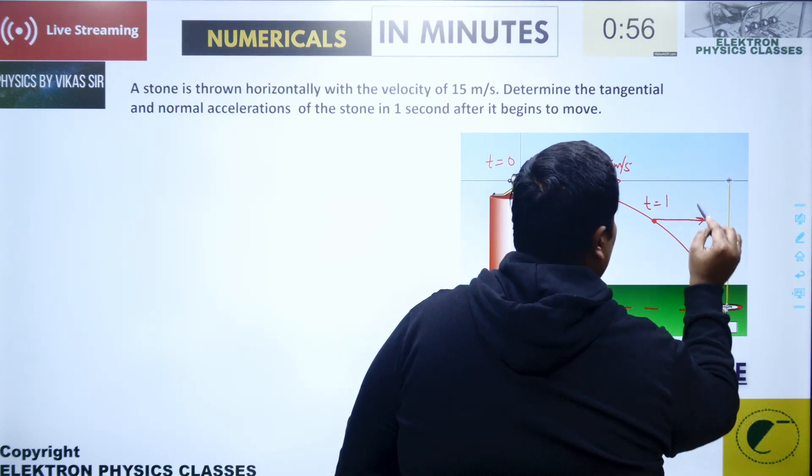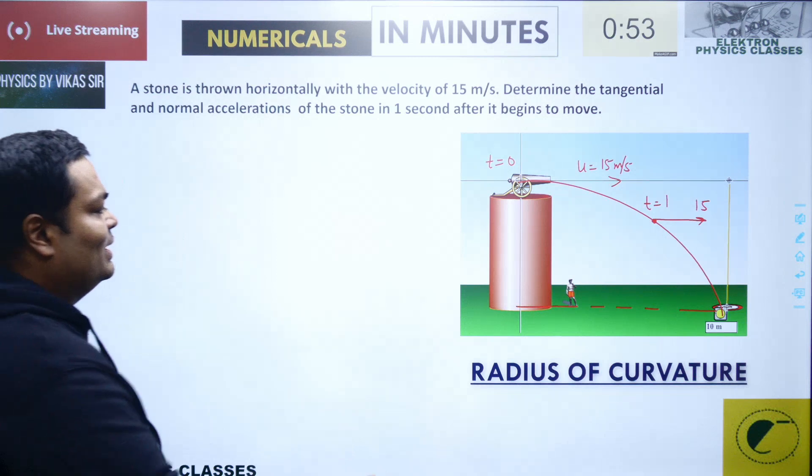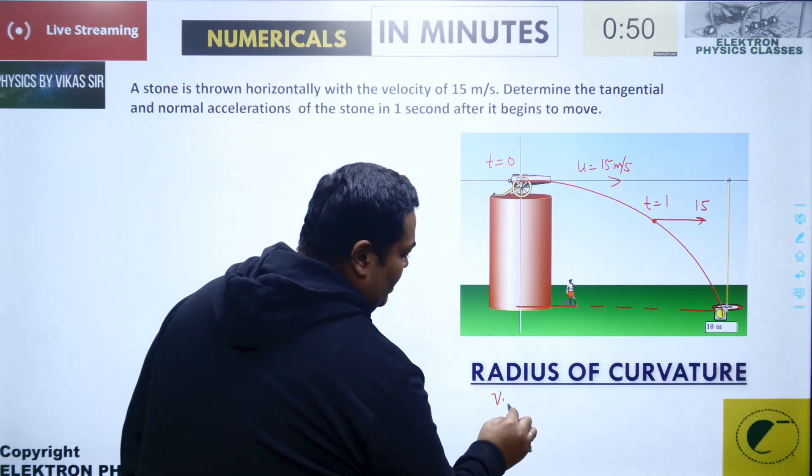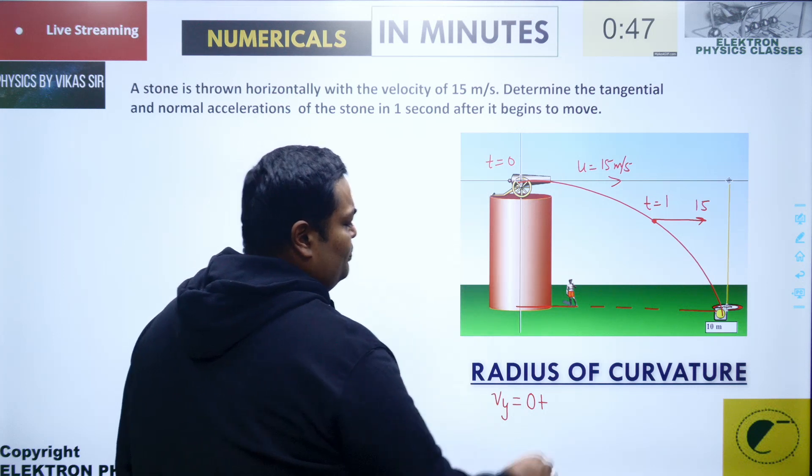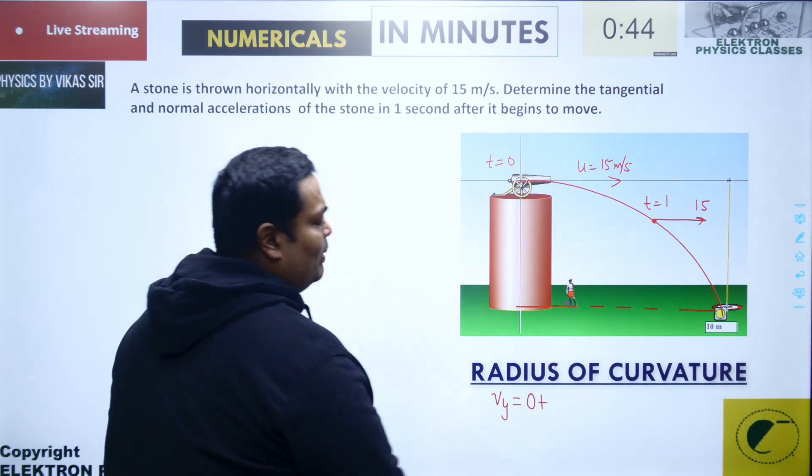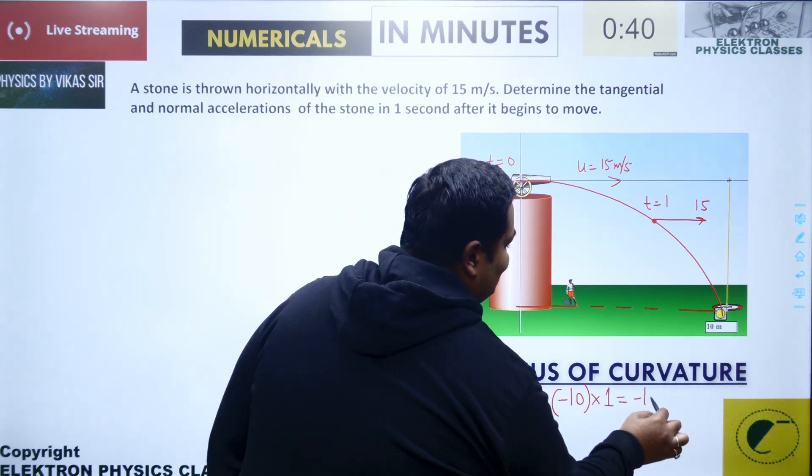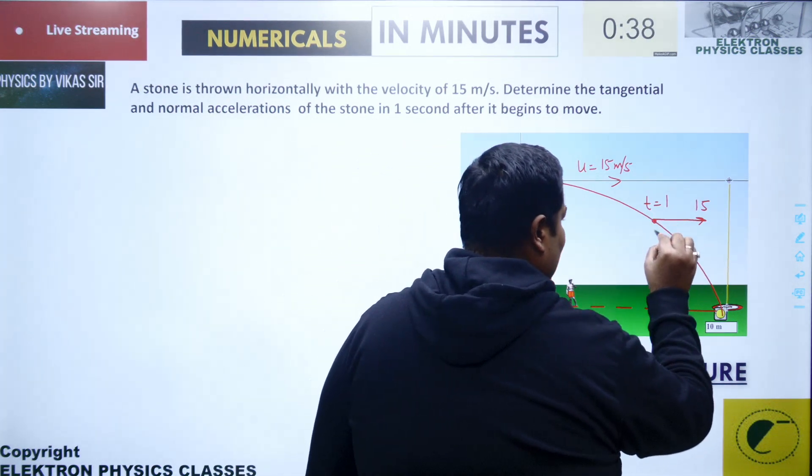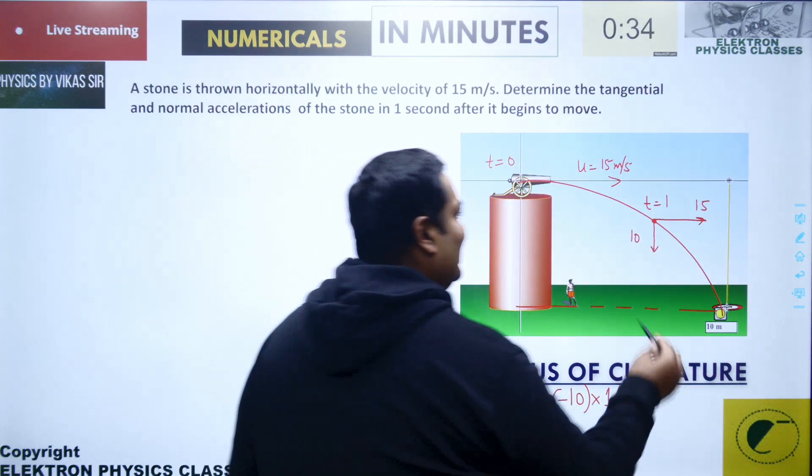The horizontal speed remains the same, it doesn't change. The vertical speed will increase. v_y will be equal to u_y, which is zero since it was thrown horizontally, plus gt. This should be minus, so minus 10 into t. t is one, so this becomes minus 10, meaning the velocity downward is 10.